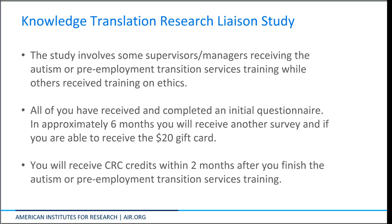All of you were asked to attend this meeting because you are participating in a research and training activity. The research study seeks to examine training supervisors as a conduit for training staff. You have been randomized into choosing a training in either autism or pre-employment transition services. Other vocational rehabilitation supervisors have been randomized into an ethics training. All of you should have completed the first questionnaire. In approximately six months, you will receive another questionnaire, and if your agency allows, you will also receive a $20 gift card after each questionnaire you complete.